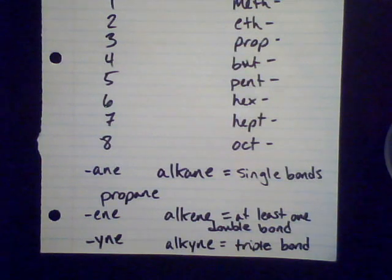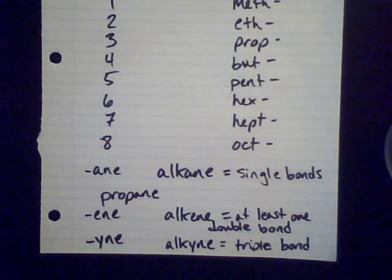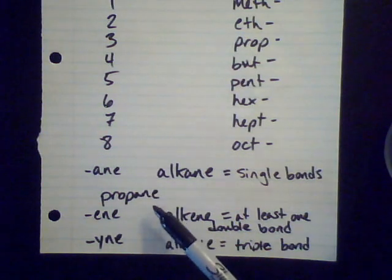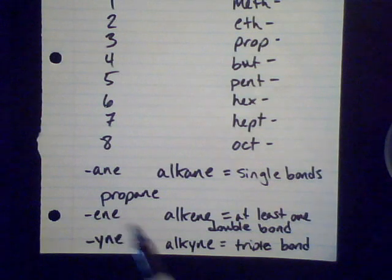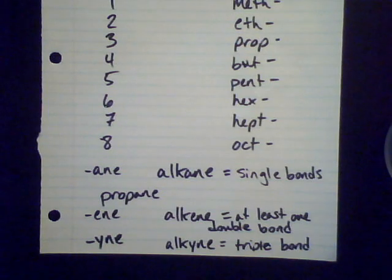So I have three different options for my hydrocarbons, which are made up of only hydrogen and carbon. They can have different bonding patterns: single bonds give me alkanes, alkenes have at least one double bond, and alkynes have at least one triple bond. These endings correspond to that. So if I had propene instead of propane, that means three carbons with at least one double bond. Propyne means three carbons and at least one triple bond. If you know the structure you know the name, and if you know the name you can produce the structure.